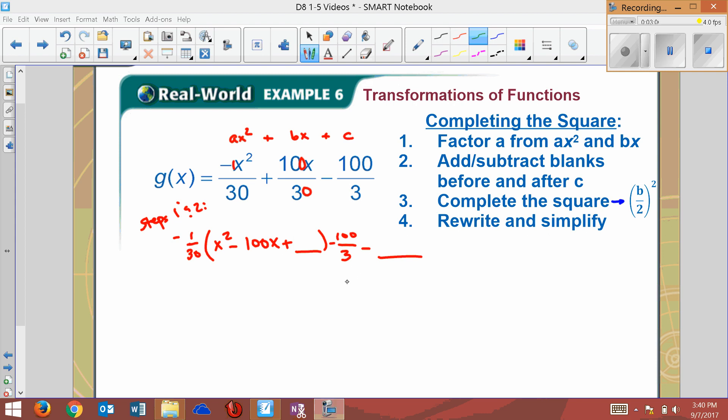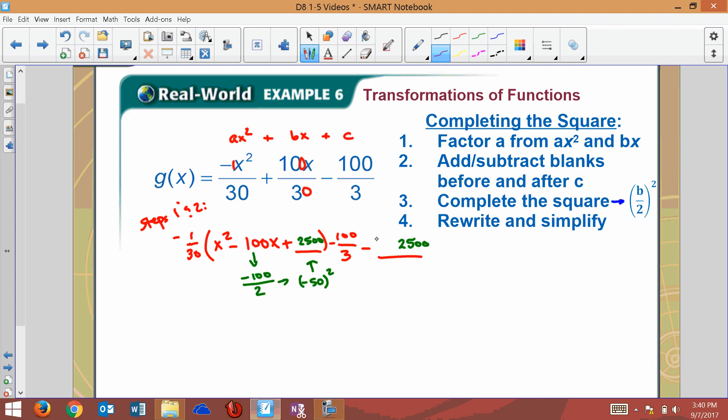Now step three tells me how to complete the square. You take your b term, you divide it by two, which is going to give me negative 50, and then you square that term. That's what that's telling you - take your b divided by two, square it, which is going to be 2500 if you do the math. Now that 2500 goes over here as well, but one thing that's not stated is this 2500 doesn't just go alone. Since it's going to get multiplied by that a here, it also needs to be multiplied by that a there, so I'm going to actually fill in a negative one over 30 here.